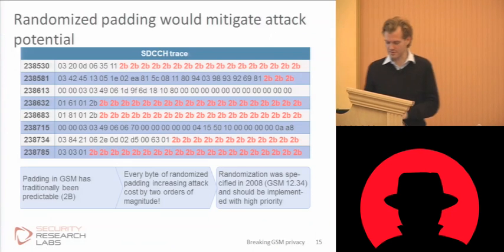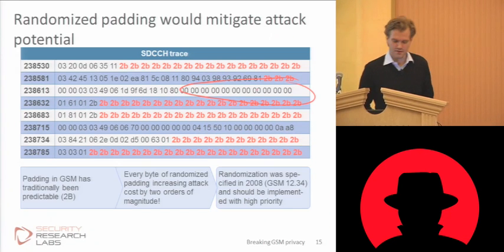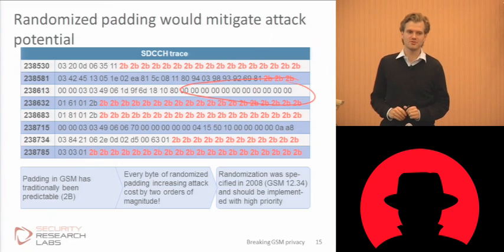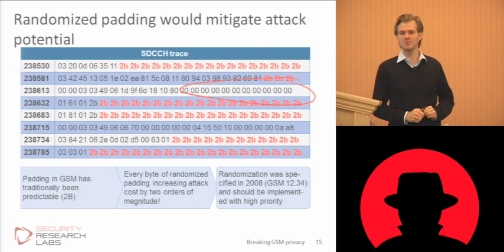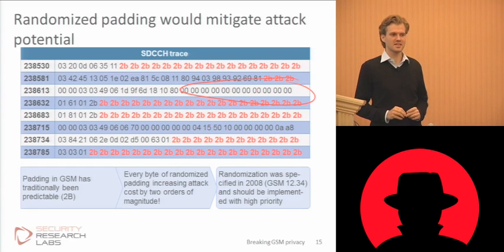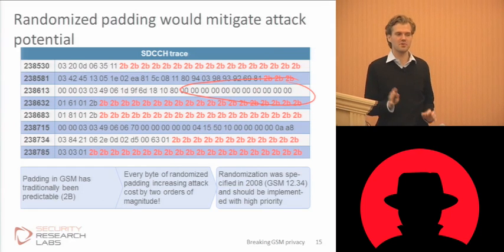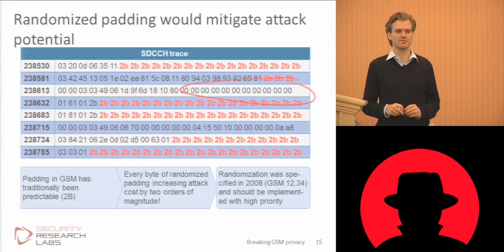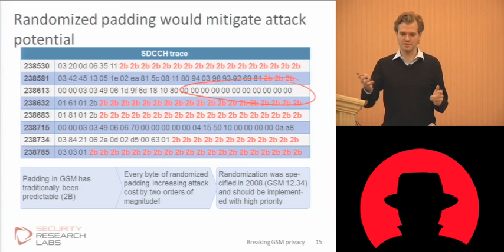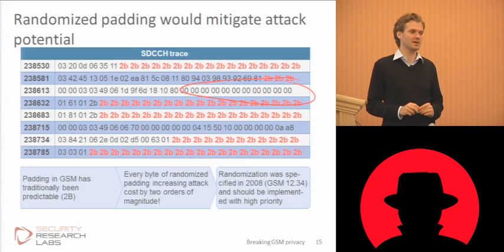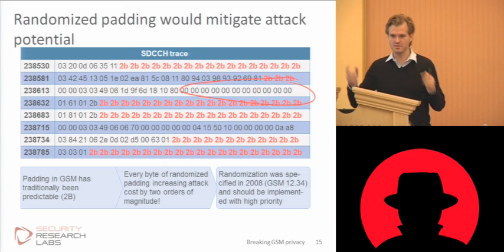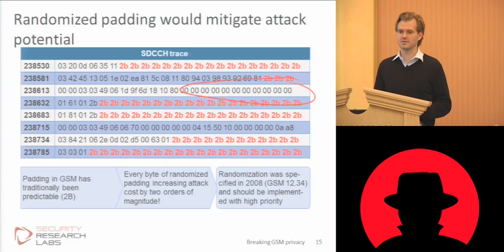Exactly these 2Bs and the zeros led GSMA — the umbrella organization of the GSM operators — to standardize two years ago that these 2Bs should go away and be replaced with just random junk. Do you think this tiny software patch — very comparable to the patch Dan Kaminsky called for in DNS two years ago, where he just wanted static numbers to be replaced with random numbers — has been implemented anywhere? We have not seen it. It's a tiny patch: replace 2B with a random number generator, software only, and still it's not being seen in the world.